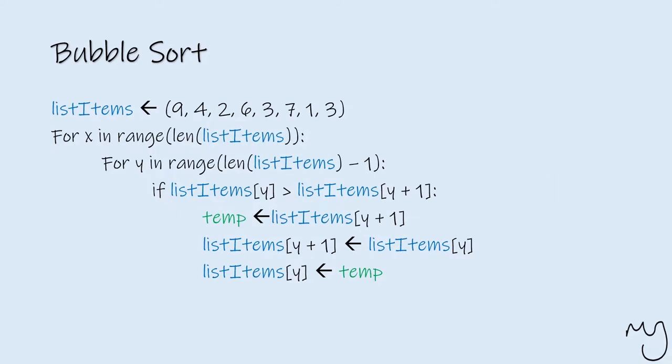The bubble sort algorithm looks like this. You provide a list of items to the user and then in a nested iterative way, it continues for however many items there are initially inside of the list. And then the second loop looks at the range of items that exist inside of the list with minus one.